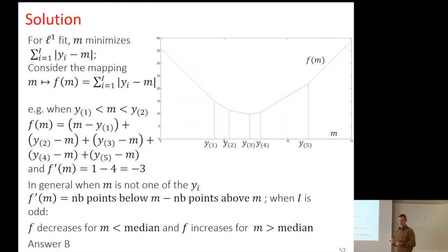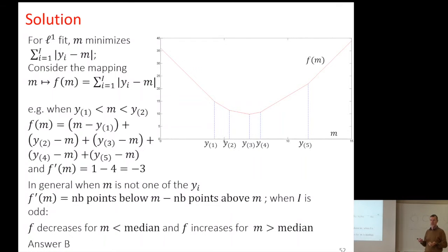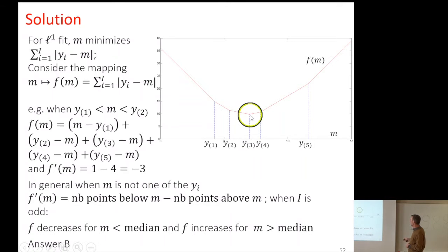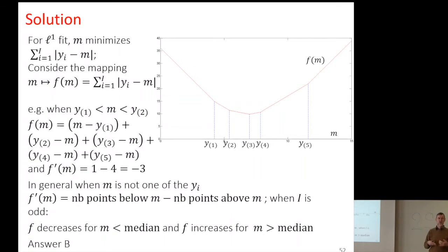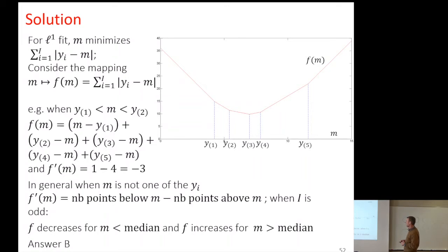If one of the values changes dramatically, it will change one of the intervals, but as we know for the median, if one value changes, it might change the median by one position — from Y3 to Y2, for example. Or if the largest value is the one changed, the median won't change at all. This robustness comes from the fact that this is based on order statistics, which are inherently more robust to outliers.